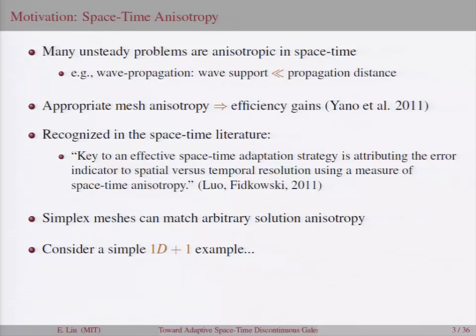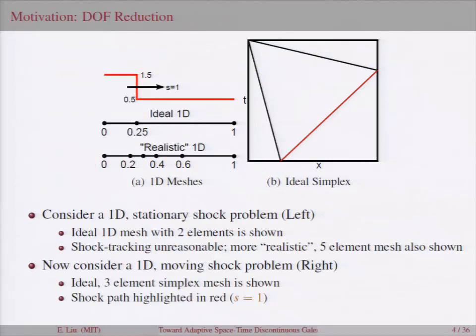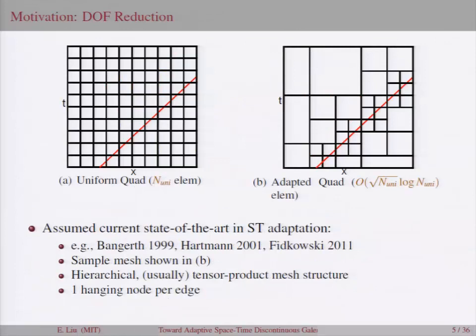So let's consider a really simple 1D problem. It's a stationary shock. Ideally, you would expect a mesh that looks like this, just two elements. Shock tracking is not realistic, so I drew a more realistic mesh of five elements. If the shock is now moving to the right, the ideal mesh in space-time might look like this with only three elements. But if you're using a traditional method of lines type of approach, then the number of degrees of freedom that you have in space-time is actually a whole bunch, because you have to take that initial spatial mesh and basically just copy it straight up a whole bunch of times. And I'll say this mesh has n-uni elements in it.